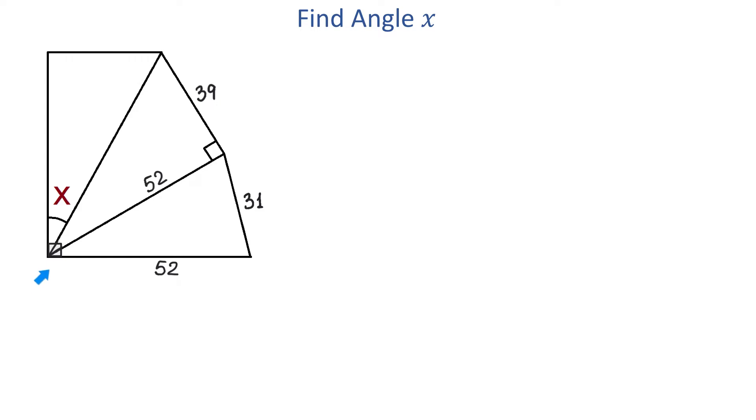Now because at this vertex we have a 90 degree angle, to find angle x we will subtract these two angles from 90 degrees. So then first we need to find these two angles. Let's call them angle A and angle B.